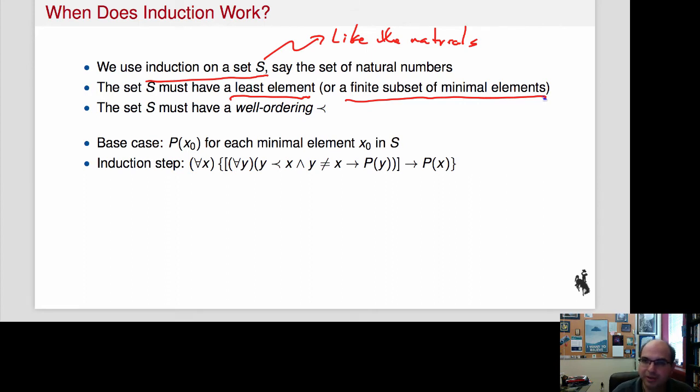For binary trees, that might be a leaf. That might be the empty tree. It depends, sometimes it's convenient to do one, sometimes the other. For a list, it could be the empty list. For a set, it could be the empty set. That's the least element.